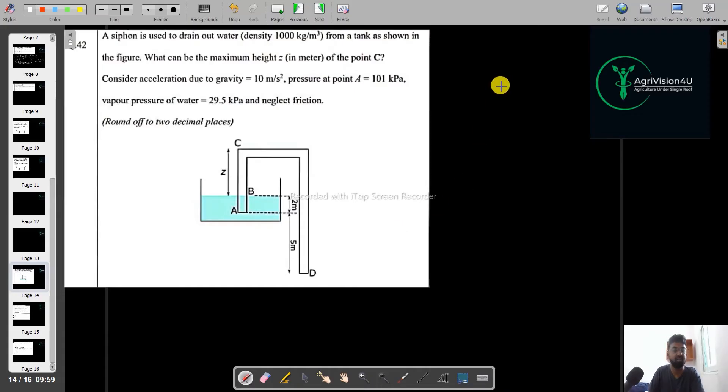In this question, a siphon is used to drain out water with density 1000 kg per meter cube from a tank as shown in the figure. What will be the maximum height Z? We have to calculate the maximum height at point C. Pressure at point A is given, and the vapor pressure of water is the minimum at point C. Since velocity is maximum, pressure will be minimum to get Z as our maximum value. Neglect the friction. Apply Bernoulli at point A and point C.